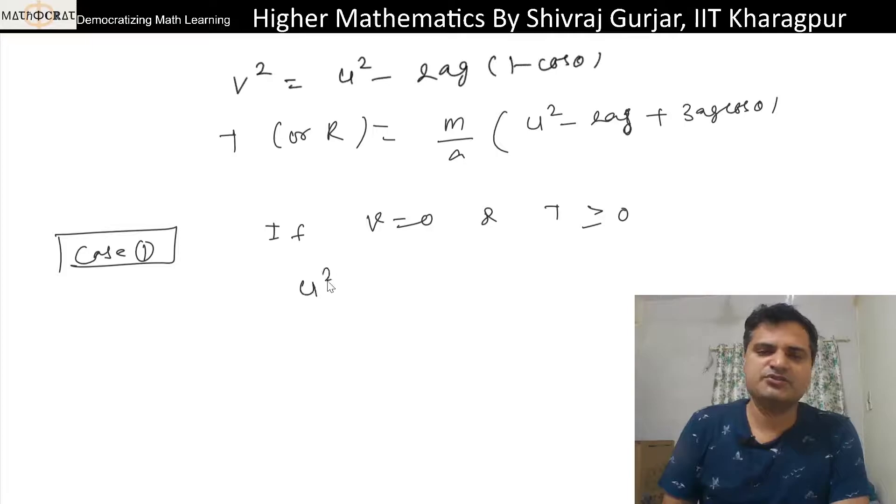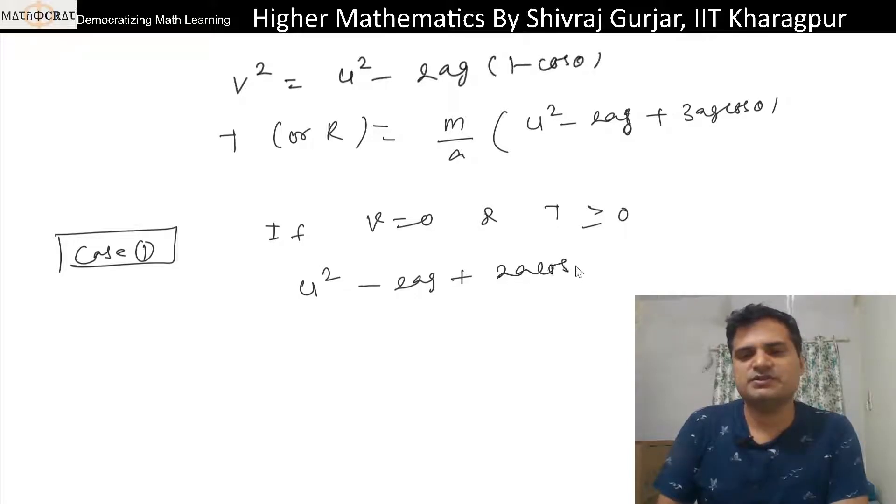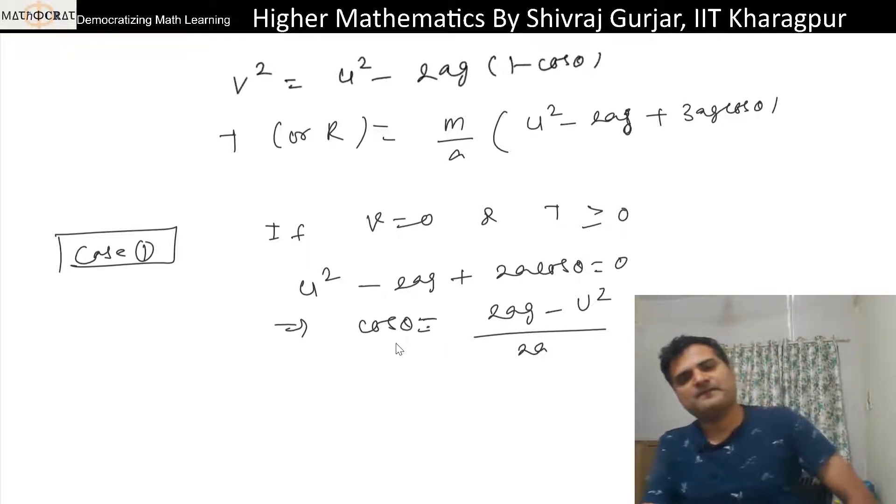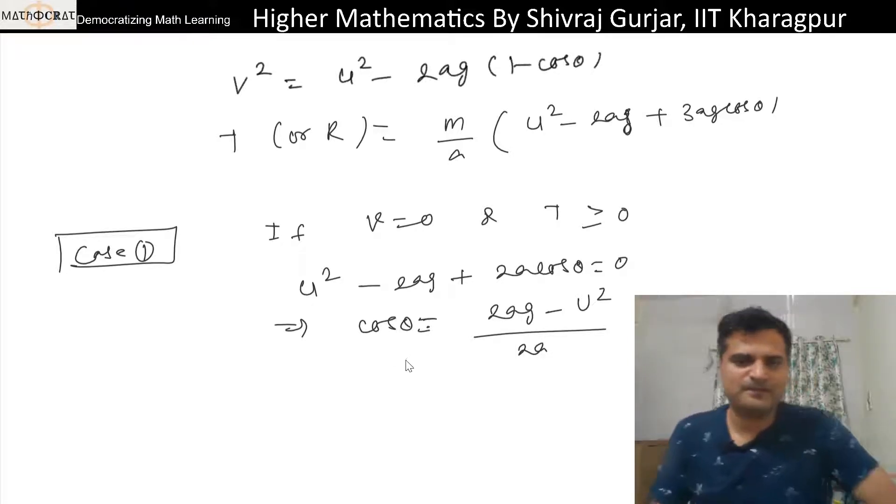So velocity v is 0, u² - 2az + 2az cos θ = 0. That means cos θ is nothing but (2az - u²) divided by 2az.